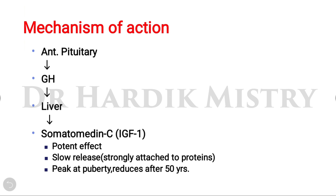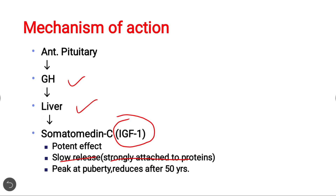The anterior pituitary releases growth hormone, which reaches the liver, and there will be release of somatomedin C, also known as insulin-like growth factor 1 (IGF-1). In the form of somatomedin C or IGF-1, growth hormone potentiates its effect. It is strongly attached to proteins, the release is very slow, and peaks at puberty, then reduces after 50 years.